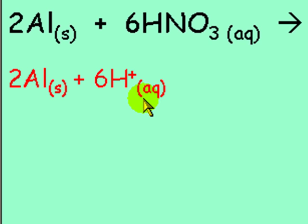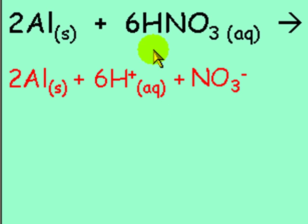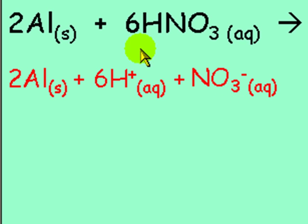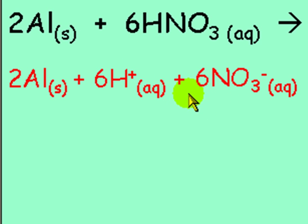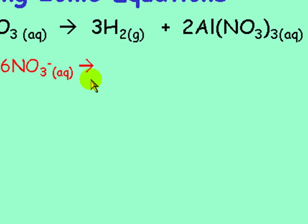Now we bring down the NO₃⁻ with a minus charge. Since HNO₃ is aqueous, so is the NO₃⁻. Notice there is a big 6 in front of HNO₃, which means there are 6 H's and also 6 NO₃⁻'s, so we put a 6 in front of each. Now we put the arrow. There are 3 H₂ gas molecules — gases we don't dissociate, we just bring them down as they are.